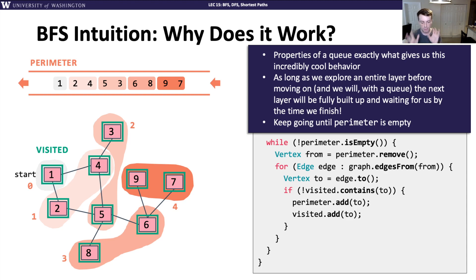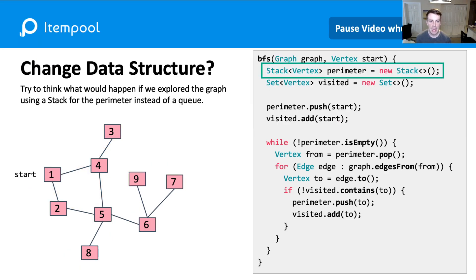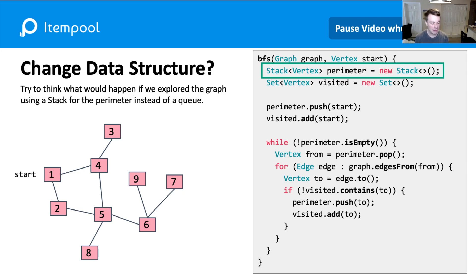Now I want you to test your understanding by changing one subtle thing. Think about this graph example and consider: how would this algorithm change if I removed the queue and instead used a stack? Same algorithm, same starting at node one and doing exploration — just change the queue to a stack. Take a piece of paper and a pencil, try to trace through it, and see if you notice any patterns.